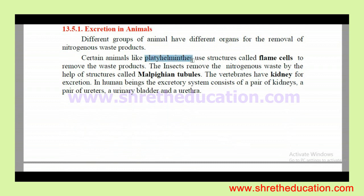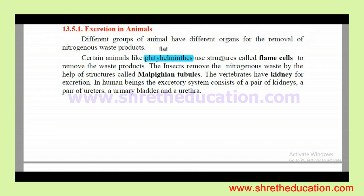For example, in flatworms, the excretory structure is flame cells. Roundworms also use similar excretory structures. Flatworms use flame cells for excretion.